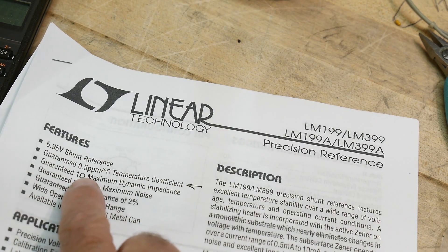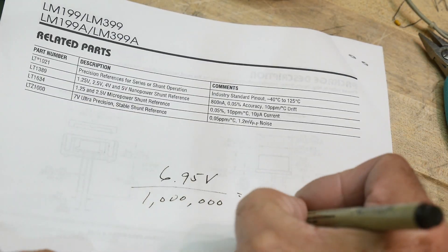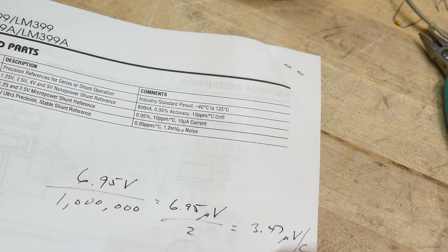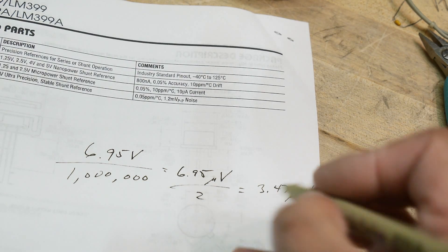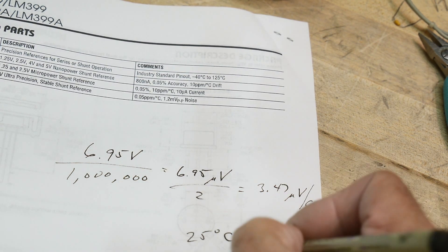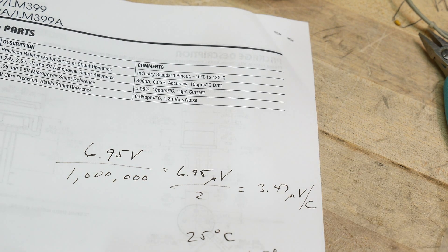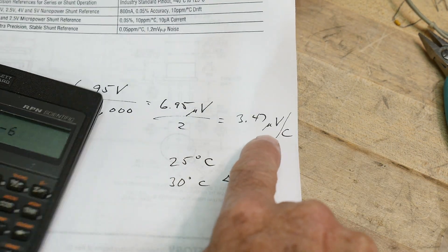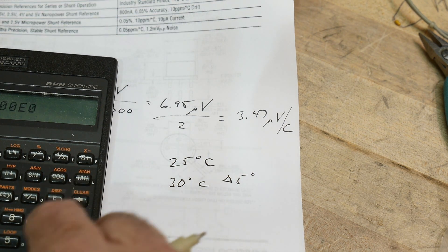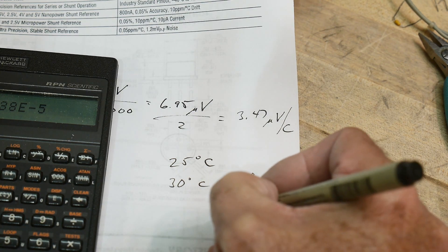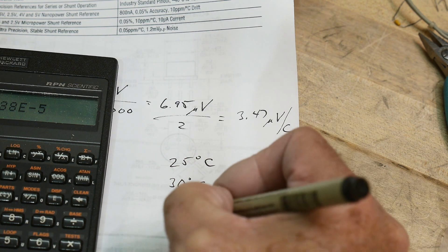But the datasheet says 0.5 ppm, so that's one half, so we get to divide this by two. It's 3.47 microvolts per degree C. That means if you calibrate your instrument at 25 degrees C and you use it at 30 degrees C, you have a five degree delta.